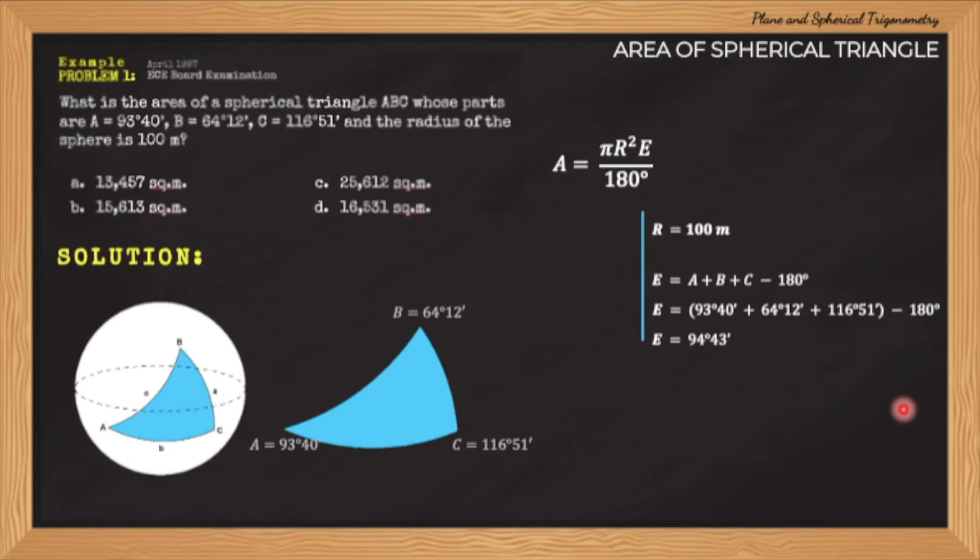Next, we then proceed to substitute the value of E and R to our formula for the area. And we will get the final answer of 16,531.18 square meters. So from the choices in the problem, the correct answer is letter D, which is 16,531 square meters.